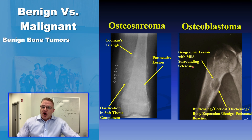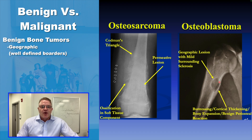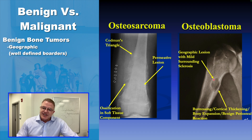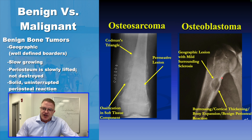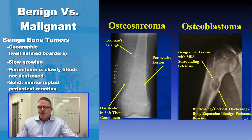Benign tumors are geographic in nature, meaning you can tell the borders of the tumor — where it begins and ends. Here we see an osteoblastoma, which is a benign bone-forming tumor. It is geographic, with a sharp, narrow zone of transition between the tumor and normal bone; you can make out where the tumor begins and ends. The tumor can destroy the cortex, but it grows much slower than an osteosarcoma — slow enough to stimulate osteoclasts to eat the bone. It does not penetrate through the Haversian canals. When it penetrates the cortex, the periosteum is lifted up but not destroyed, giving you a solid, uninterrupted periosteal reaction. You might see a little mineralization in an osteoblastoma, helping place it in the bone-forming tumor category.